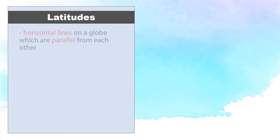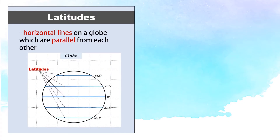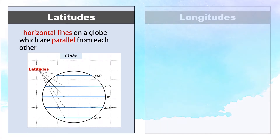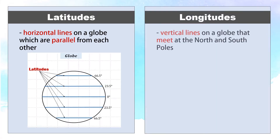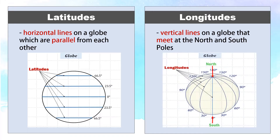In Part 1, you have learned that the latitudes are horizontal lines on a globe which are parallel from each other, while the longitudes are vertical lines on a globe that meet at the North and South Poles.